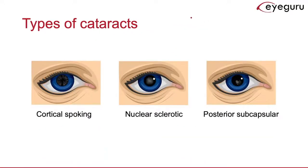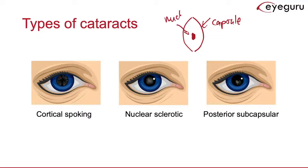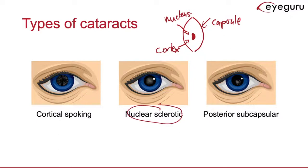The lens has three main components: the outer capsule, the inner nucleus, and in between is the cortex. Cataracts can develop in different areas of the lens. For example, cortical-spoking and posterior subcapsular cataracts both develop in the cortex, whereas nuclear sclerotic cataracts develop in the nucleus.